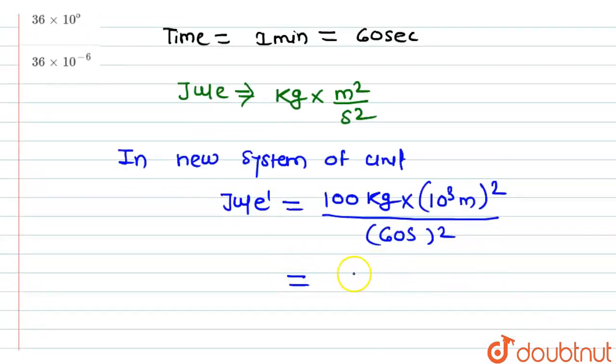So it will be equal to 100 into 10 raised to the power 6 divided by 60 square, that is 3600 kg meter square by second square.